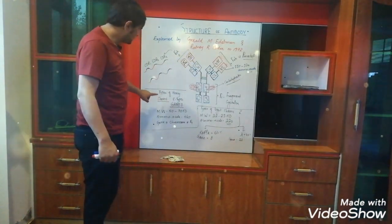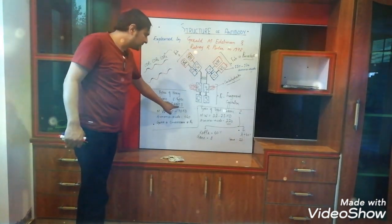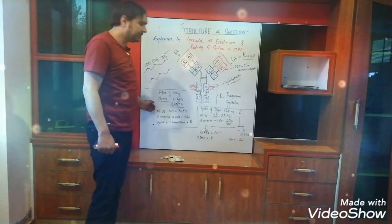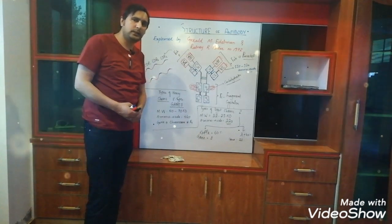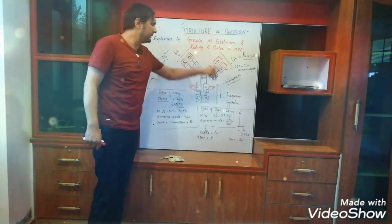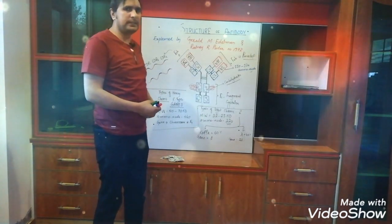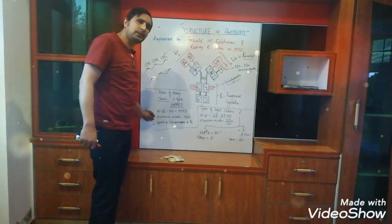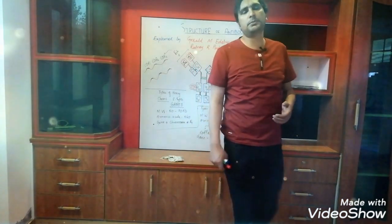Antibodies are classified into five types on the basis of heavy chains: gamma, alpha, mu, epsilon, and delta types. The molecular weight of heavy chains ranges from 50 to 70 kilodaltons. The number of amino acids in heavy chains is about 440. The sequence of these amino acids is determined by genes found on chromosome number 14.